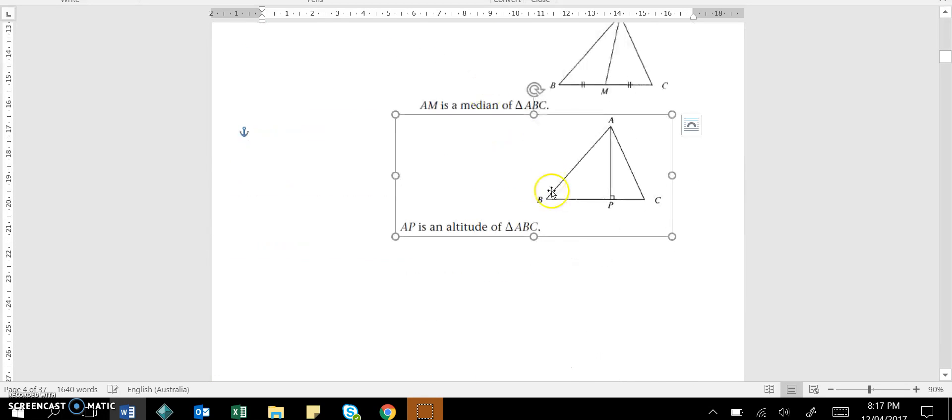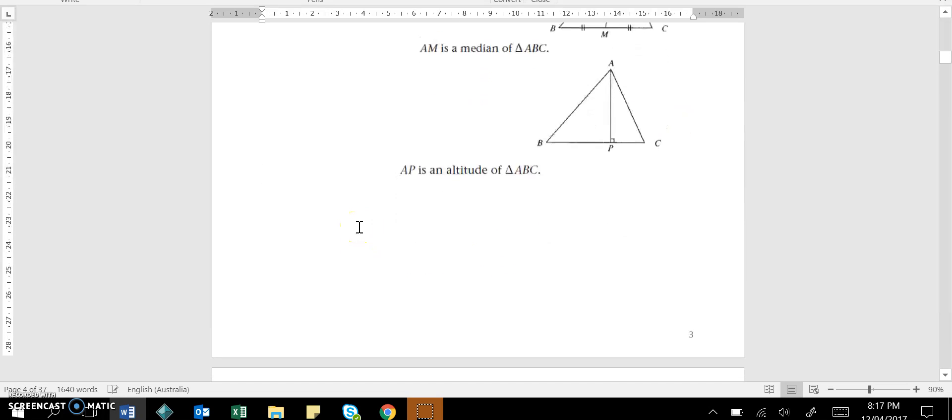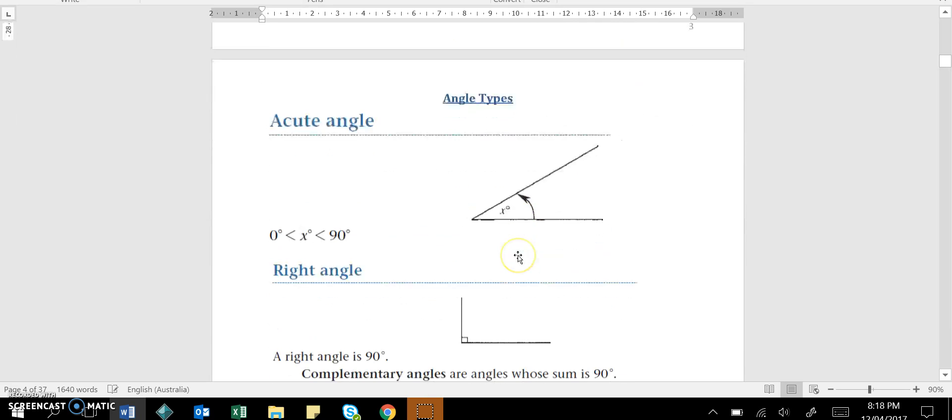What a median is. This one's often overlooked, so it's really important that you know what this word median means. And it basically is talking about the line that cuts this line here, AM, that cuts BC in half. AP is an altitude, another word that you may not know. An altitude is just a line from the highest point of the shape to the bottom, but it's perpendicular.